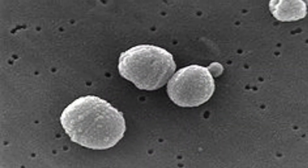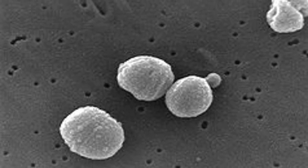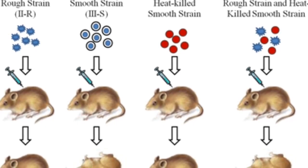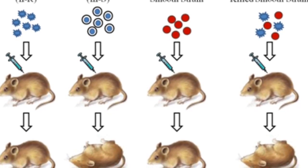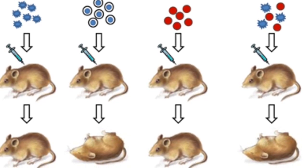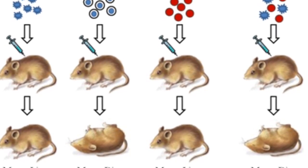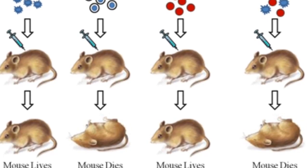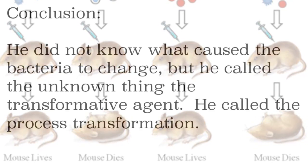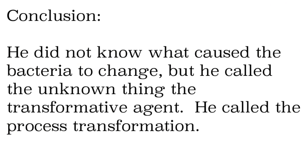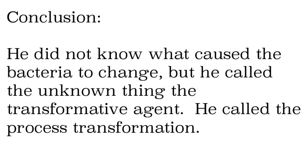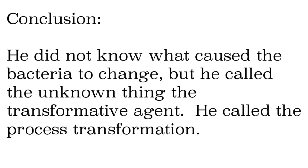Starting with Griffith — if you remember, Griffith took Streptococcus pneumoniae and was trying to figure out why it caused disease. He put a harmless strain into a mouse, and the mouse lived. He put the deadly strain into a mouse, and the mouse died. He put the dead deadly strain into a mouse, and the mouse lived. Then he put the dead deadly strain and the harmless strain together, and the mouse died, which was a surprise. He didn't know what it was, but he knew that something caused the harmless bacteria to change into the deadly bacteria, and he called that the transformative agent.